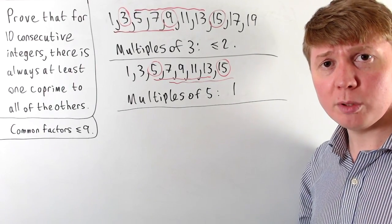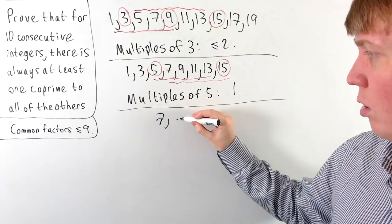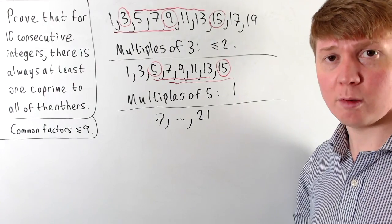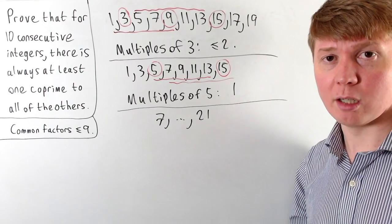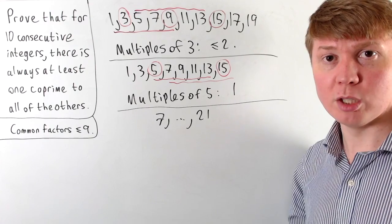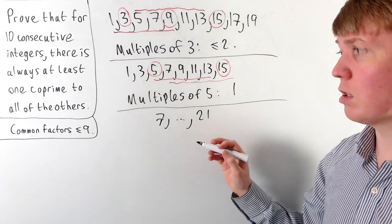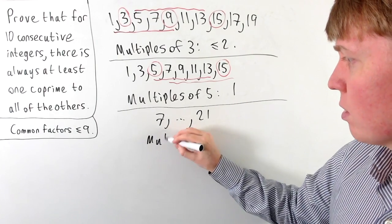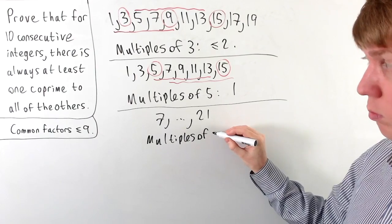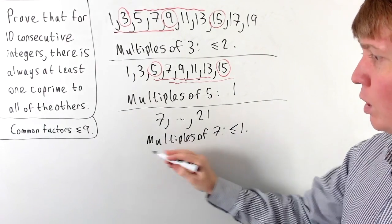If we look for multiples of 7, the next odd number after 7 which is a multiple of 7 would be 21, and these are 14 apart — far too far apart to have 2 odd multiples of 7. There just isn't enough space in our 10 consecutive integers for this. So our multiples of 7 — we've got at most 1, or we could also have 0.